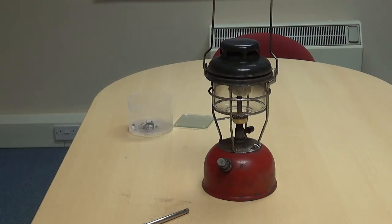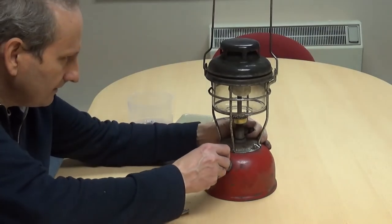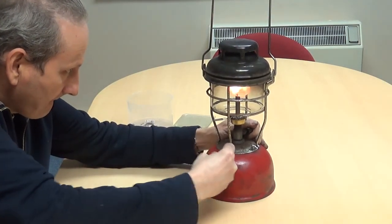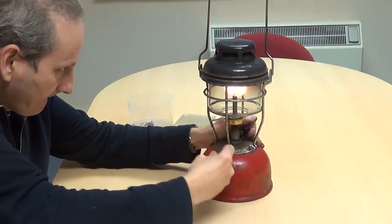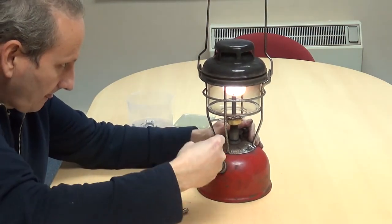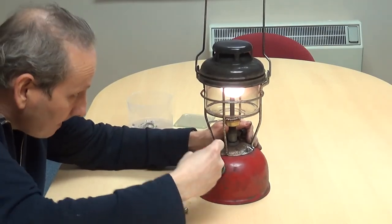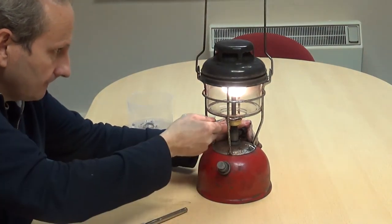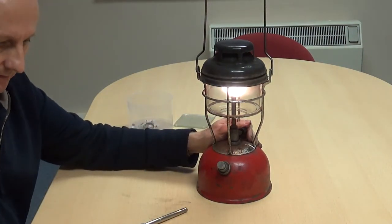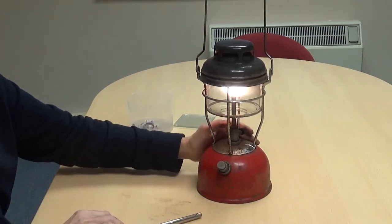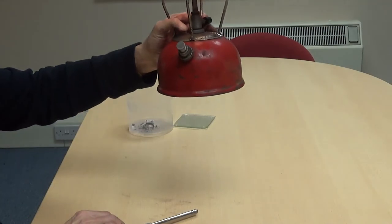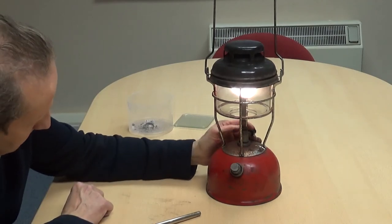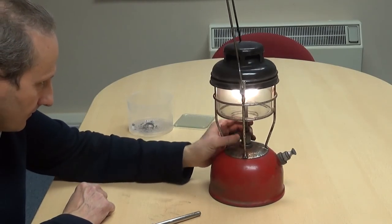Now that it's all burnt off, you should be able to light it. And that's how you change a mantle on a Tilly lamp. With a bit of light that will burn off nicely and burn the black spots off. That's also a much brighter light.